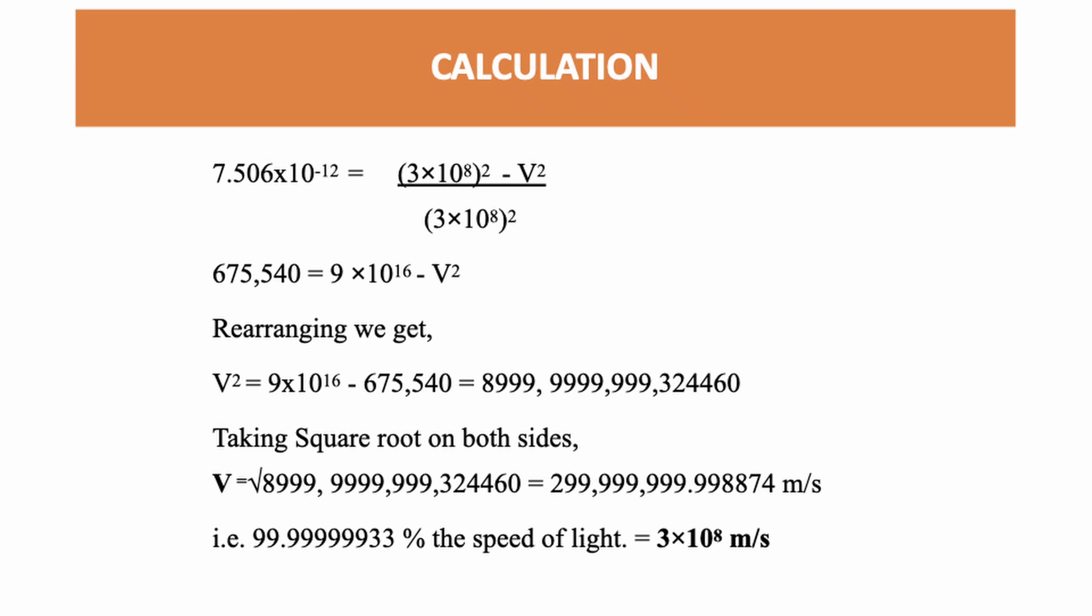we get V = 299,999,999 meters per second, which is 99.999999933 percent the velocity of light, which is 3×10⁸ meters per second. So, the velocity that God is talking about when he says a thousand years is like one day is indeed the velocity of light.